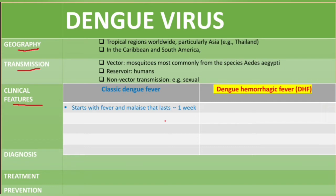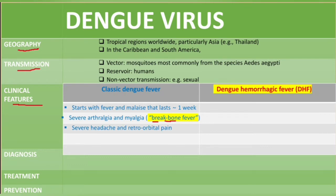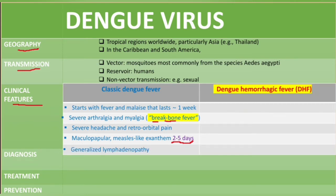Classic dengue fever, as the name implies, starts with fever and malaise and lasts for about a week. It is associated with severe arthralgia and myalgia, which is why it is sometimes referred to as break bone fever. Other symptoms include headache, retroorbital pain, and a maculopapular rash — a measles-like exanthem — which appears two to five days after the onset of fever, as well as generalized lymphadenopathy.